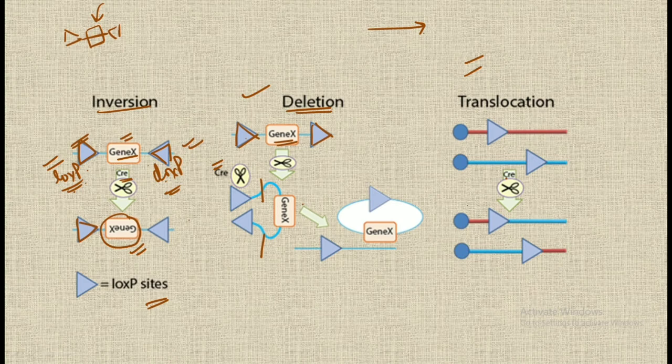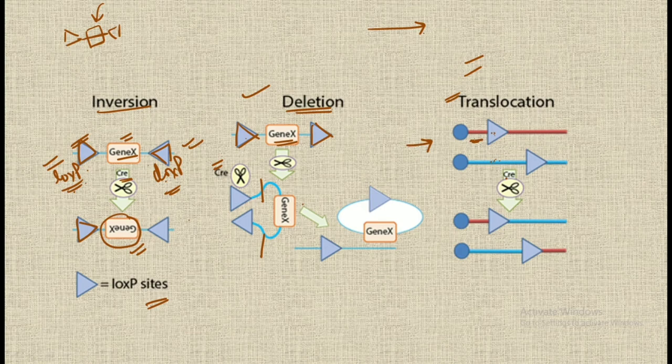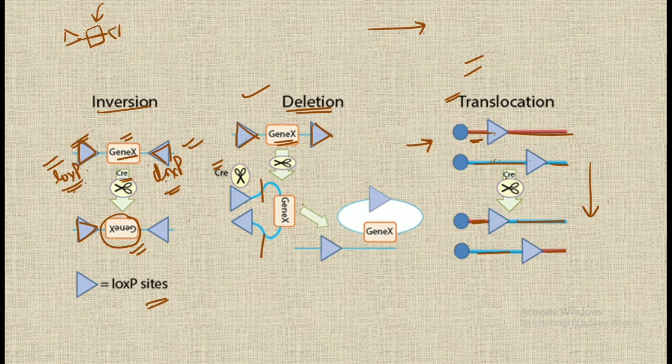In the case of translocation, the loxP site is present in two opposite strands of the gene, and as a result there occurs translocation. In the diagram you can see the red and blue arrows representing loxP sites on opposite strands. When Cre recombinase acts between these two loxP sites, a combination of red and blue occurs in both strands — this is the case of translocation.